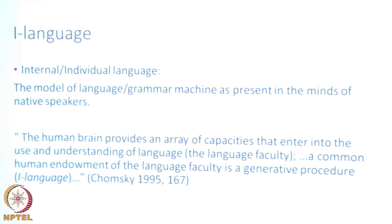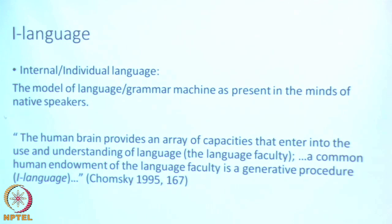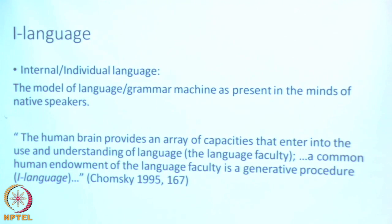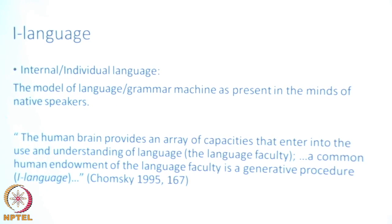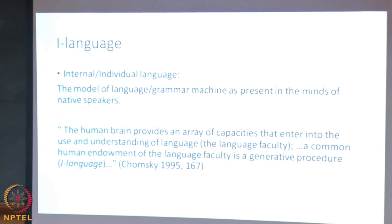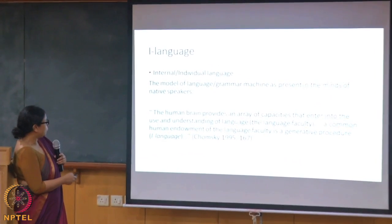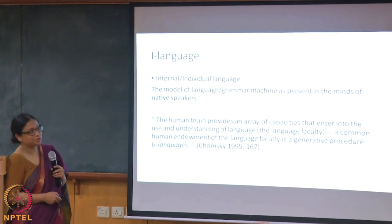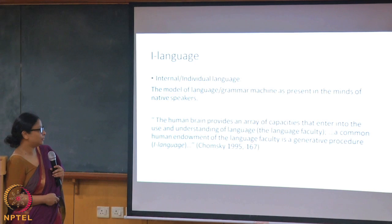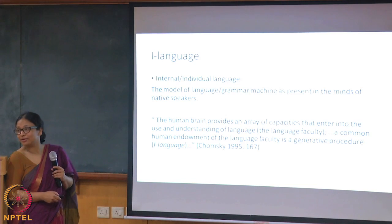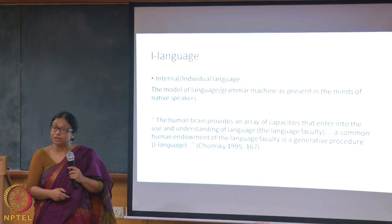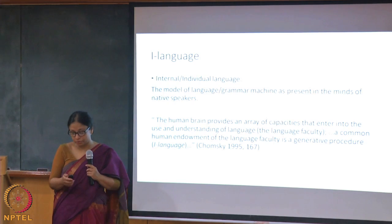We all have a core grammatical machine when we are born — all native speakers of all languages — and it develops. It allows you to learn languages very quickly, effortlessly, in a very short span of time. That core grammar machine is what we call I language. As Chomsky (1995, Minimalist Program) states: the human brain provides an array of capacities that enter into the use and understanding of language — the language faculty. This common human endowment is the generative procedure, the grammar machine, and this we call the I language.